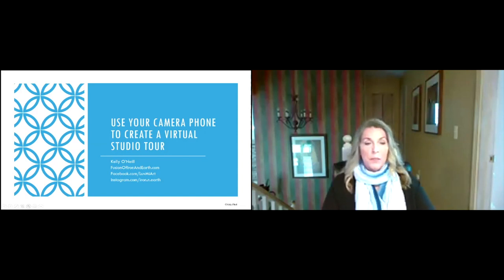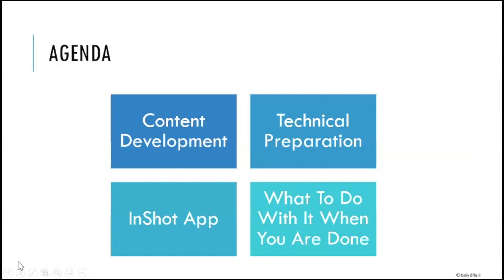I've broken the content into four areas. We're going to start with content development — what you are going to say. Then we'll talk about technical preparation to help make your content feel more professional. Then I'll spend a few moments talking about the InShot application, which is my number one recommendation for a free piece of software to edit your videos on your phone. Finally, we'll wrap up with talking about what to do with your video studio tour once you're done.